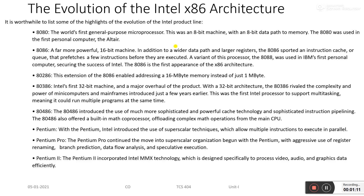It is worthwhile to list some highlights of the evolution of the Intel product line. First is the 8080, the world's first general-purpose microprocessor. This was an 8-bit machine with an 8-bit data path to the memory. The 8080 was used in the first personal computer, the Altair.